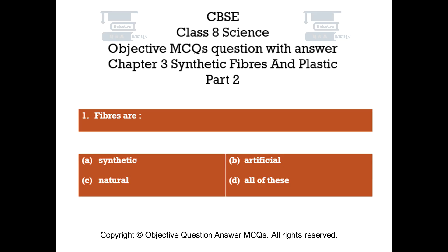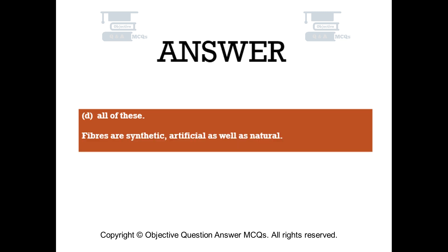Question number 1. Fibers are: Option A - synthetic, Option B - artificial, Option C - natural, Option D - all of these. The right answer is Option D, all of these. Fibers are synthetic, artificial, as well as natural.